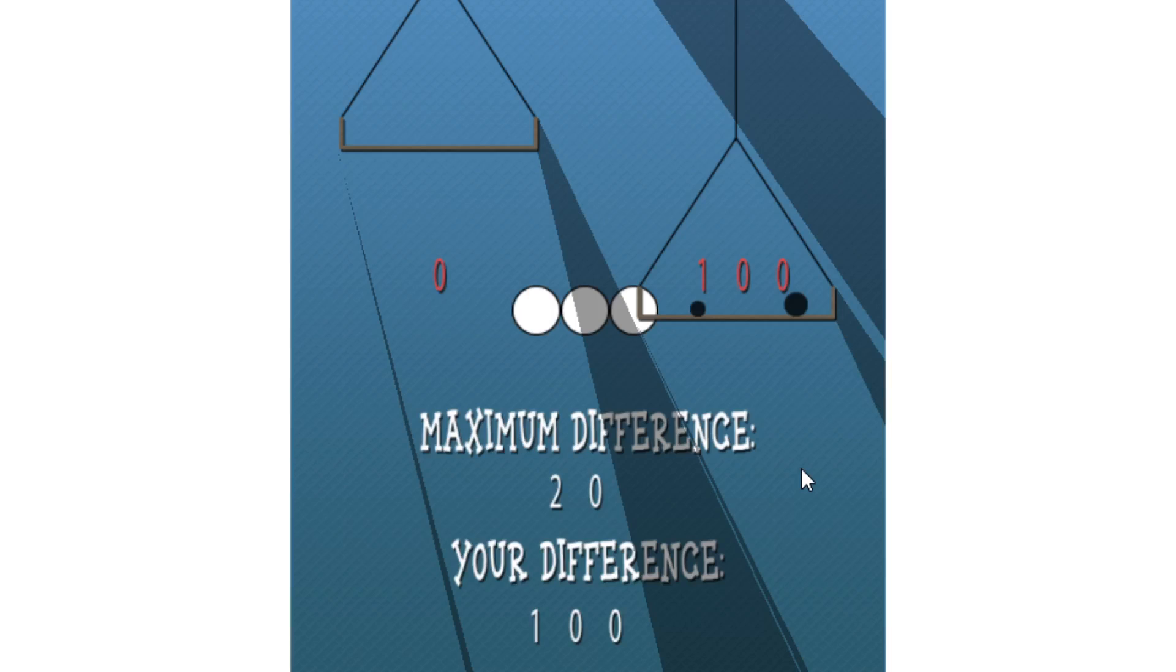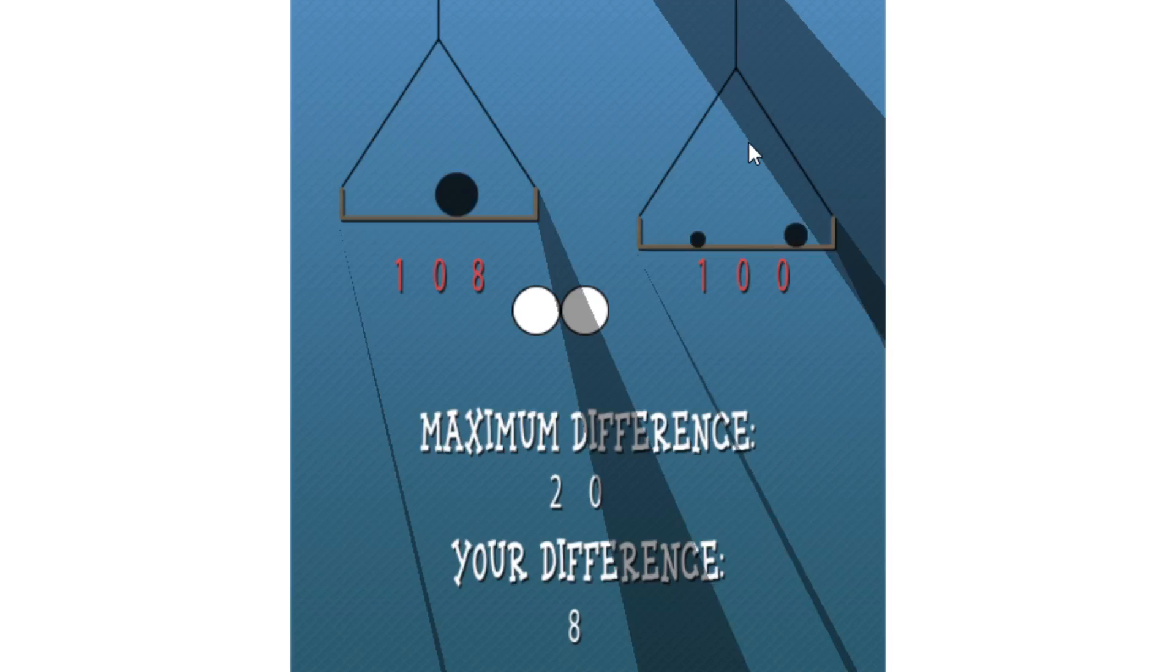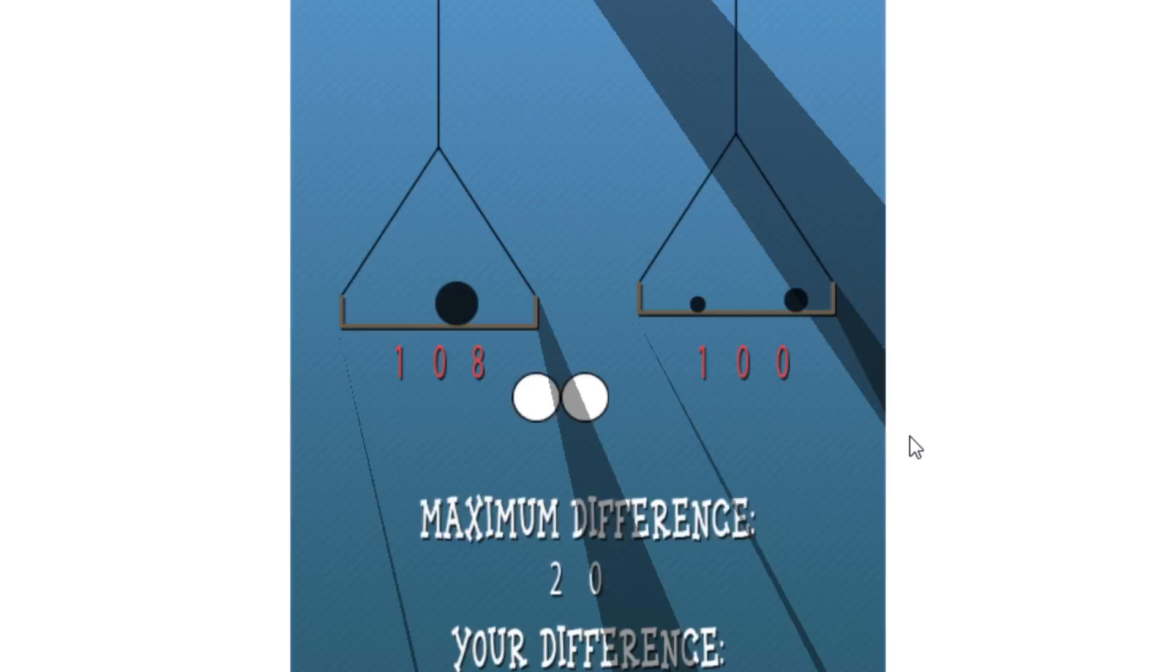So it's really a simple game to play, and you just add weights by either clicking and holding, or touching and holding, and you can drop it on either side. It does have to be above the weight, you can't click here, that doesn't do anything.